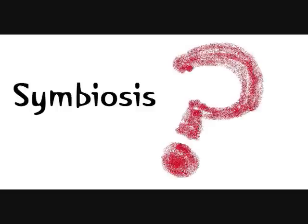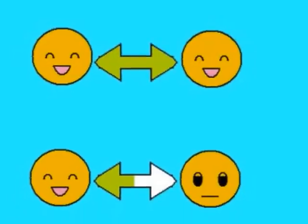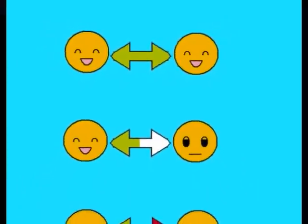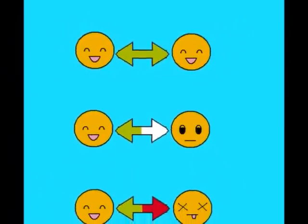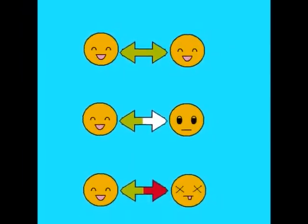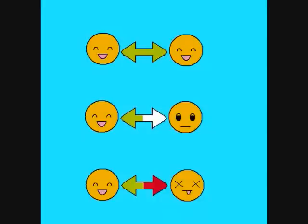The basic meaning of symbiosis is a close direct relationship between two species. This definition is accurate, but not extremely informative. There are three main types of symbiosis: mutualism, commensalism, and parasitism.